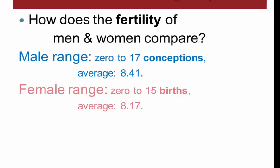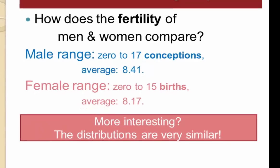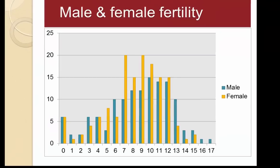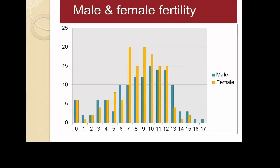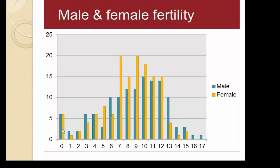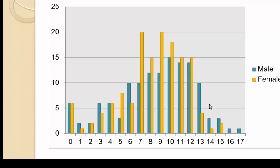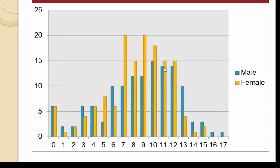These averages and ranges could hide significant differences in reproductive success, but it turns out that wasn't the case. The most interesting finding was that the distributions of live births across men and women were very similar. Here's a reconstruction of her data: the blue bars show how many men had zero conceptions, and the yellow bars show how many women had zero live births — in both cases, six. The overall pattern showed no statistical difference between the male and female distributions, meaning differences could be explained as random variation.